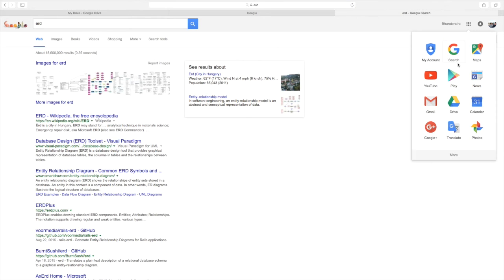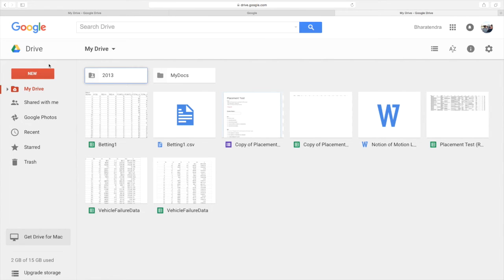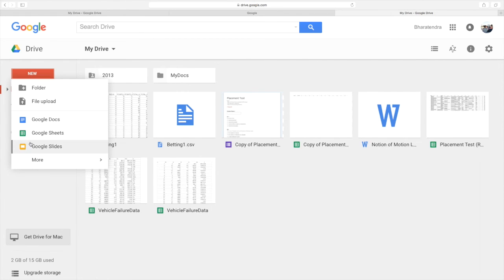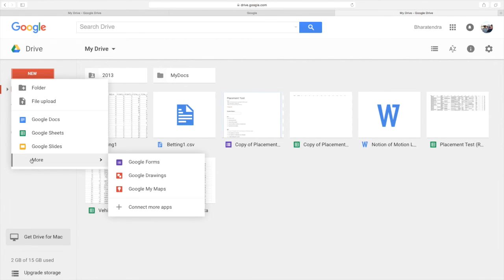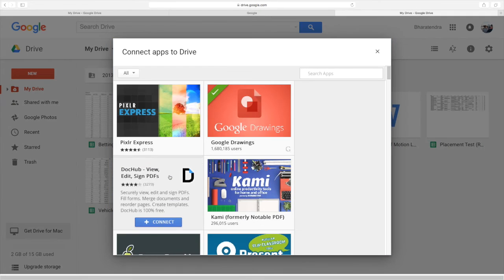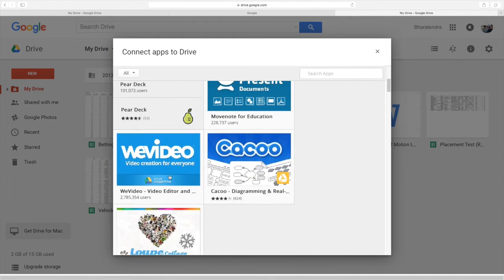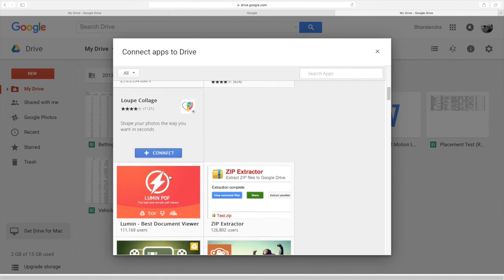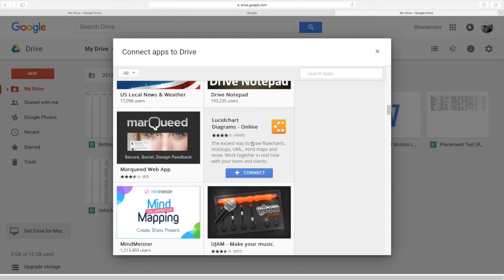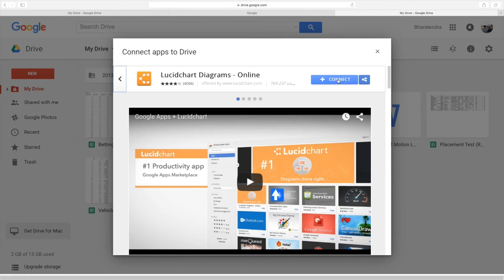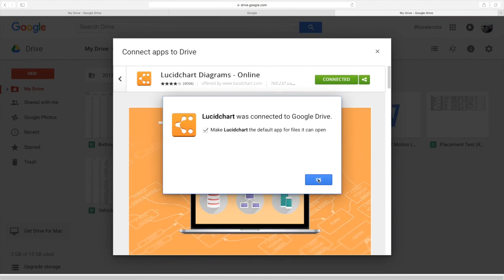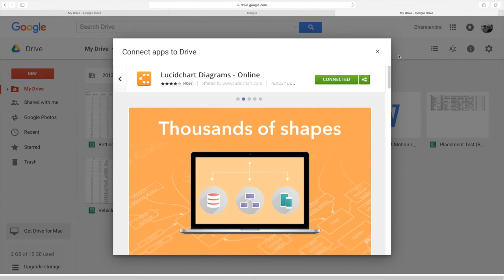If you go to your account and click on Drive, you're going to see this screen. Once you click on New, go towards the end where you have More and then Connect More Apps. If you click on that, many different apps will come. Scroll down and go to Lucidchart. Once you click on that, you can connect it with your Google Drive.